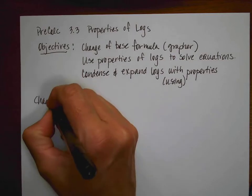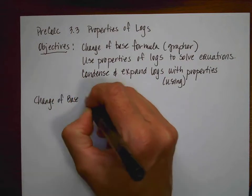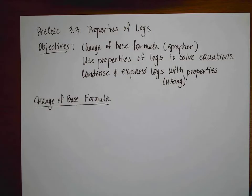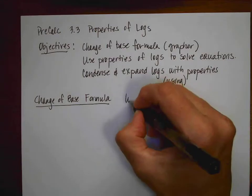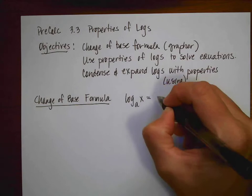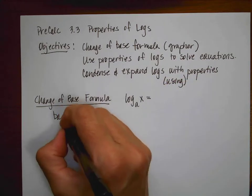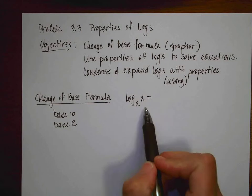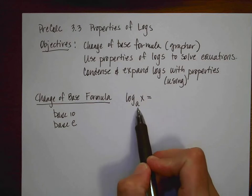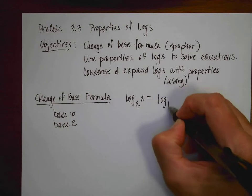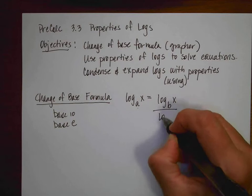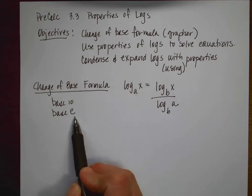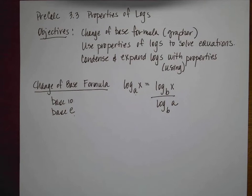When calculators were older and didn't have as many cool buttons as they do today, we used a handy thing called a change of base formula. That said the log base A of X is equal to — our calculator has base 10 and base E. We would use a change of base formula to do the calculation, choosing a base we liked divided by the log base B of A. Often they chose base 10 or base E. But that was in older days.